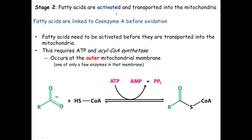How do we get fatty acids activated? Once at the new cell, they need to be coupled to something and make their way to the outer mitochondrial membrane. Very few enzymes act at the outer mitochondrial membrane, but an important one is here. An enzyme on the outer membrane connects the fatty acid and an ATP to a CoA molecule. This is called acyl-CoA synthetase — it takes an acyl group (acyl meaning any carbon chain length) and connects it to a CoA.